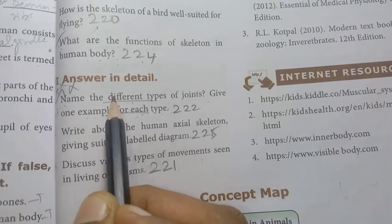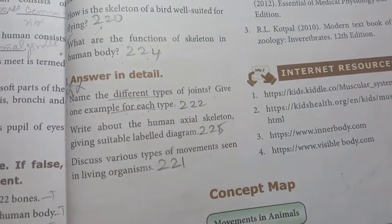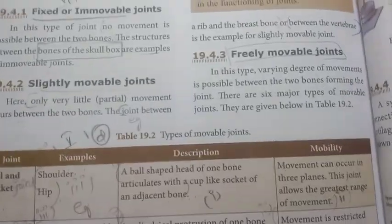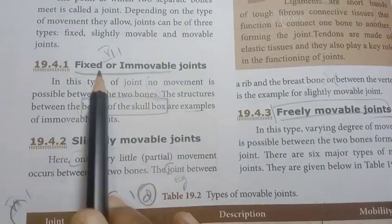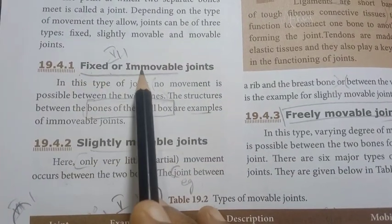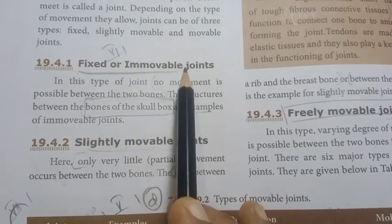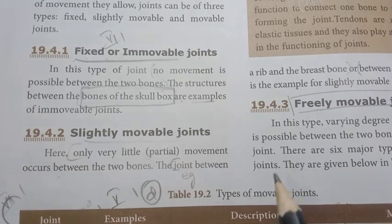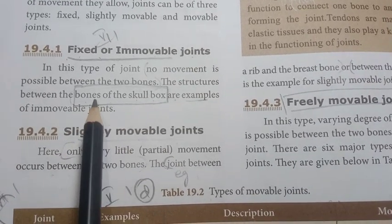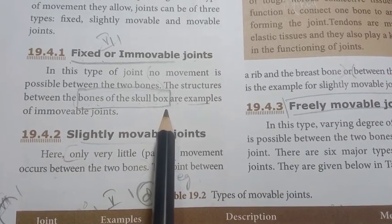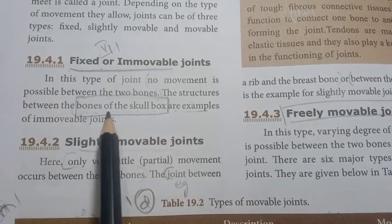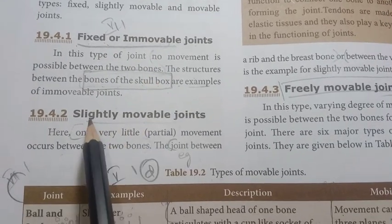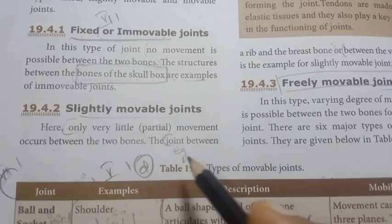Different types of joints with examples. The first type is the fixed or immovable joint. Example: bones of the skull box. The structures between the bones of the skull are fixed or immovable joints. The second type is the slightly movable joint.